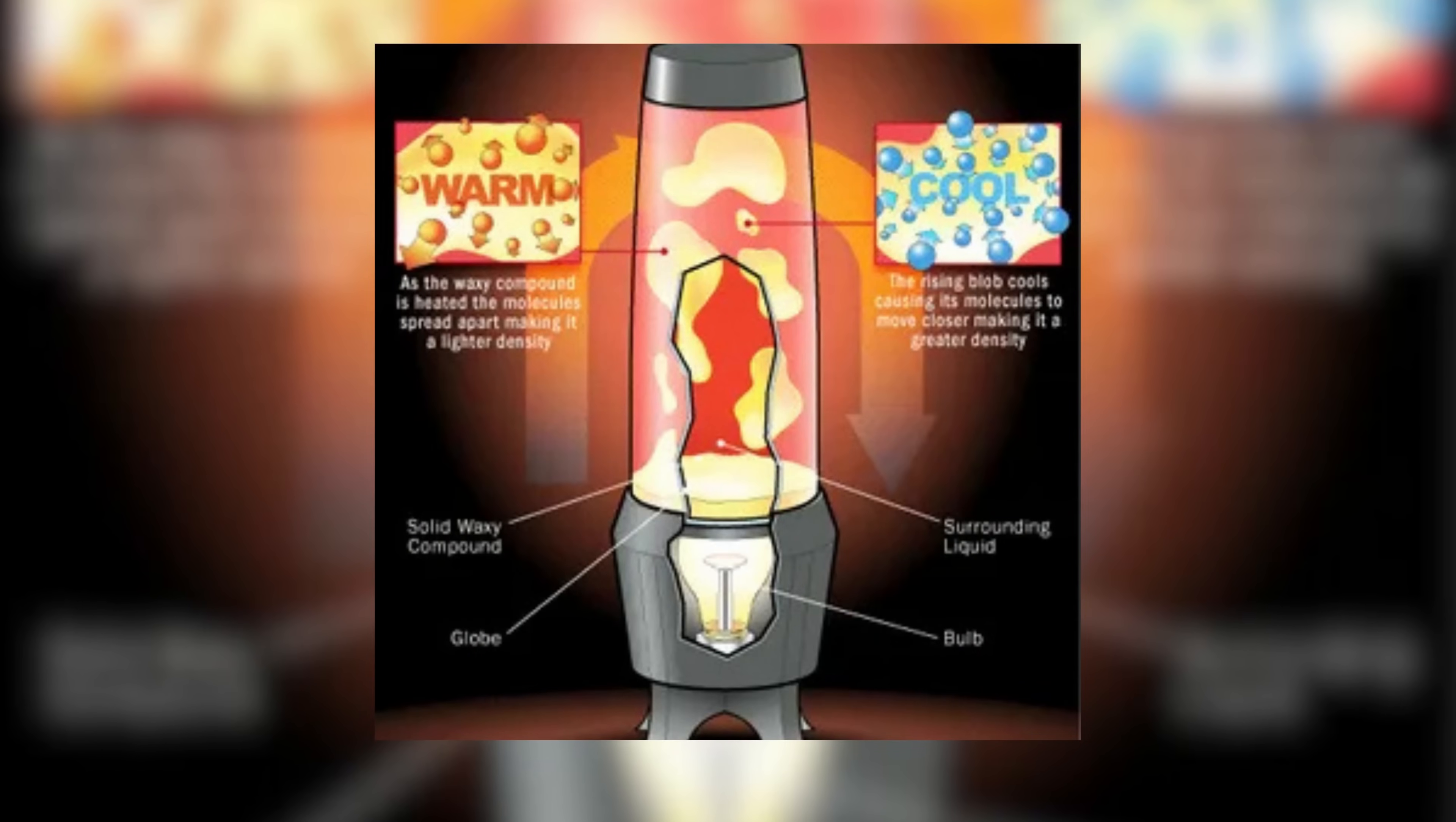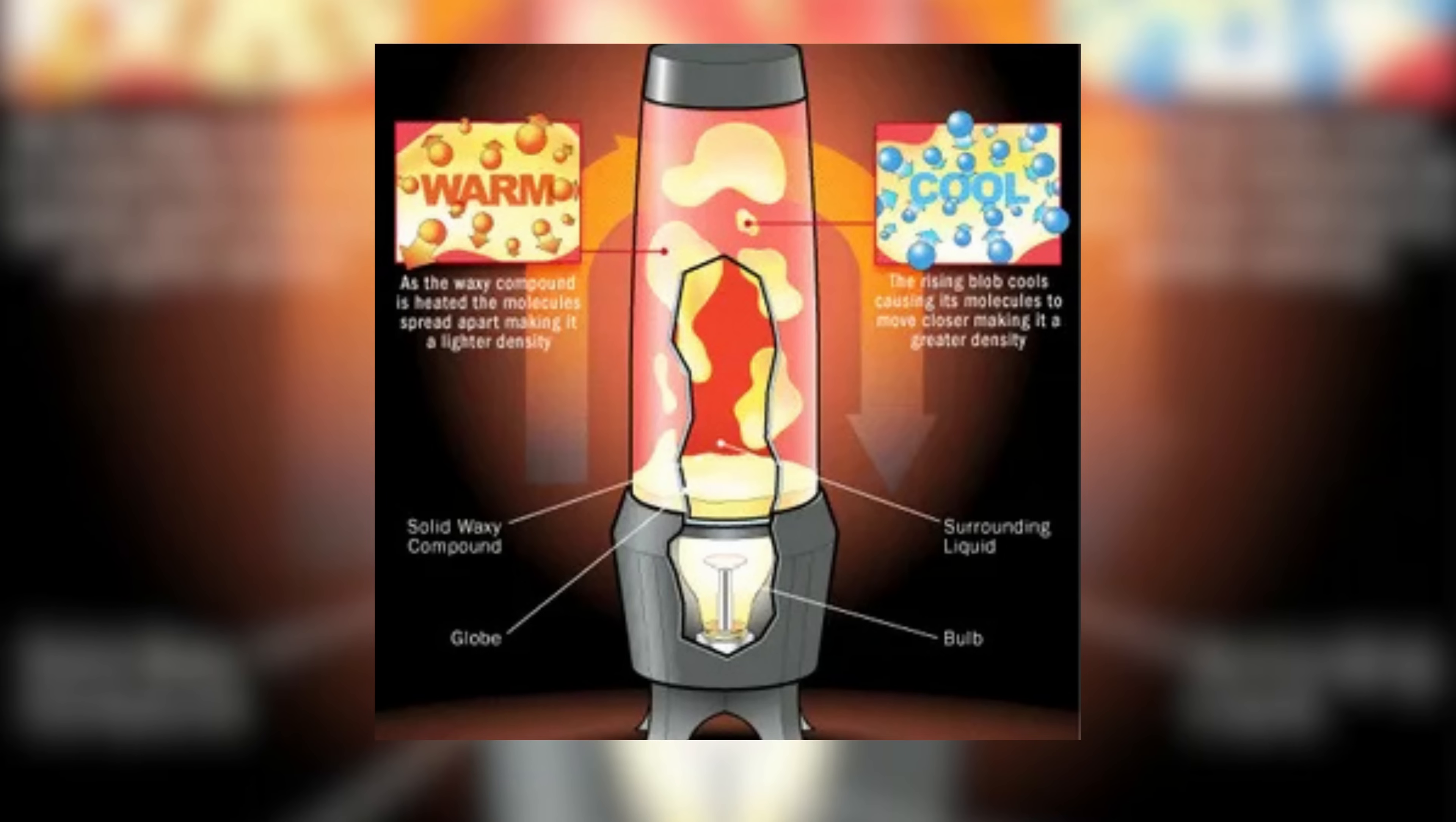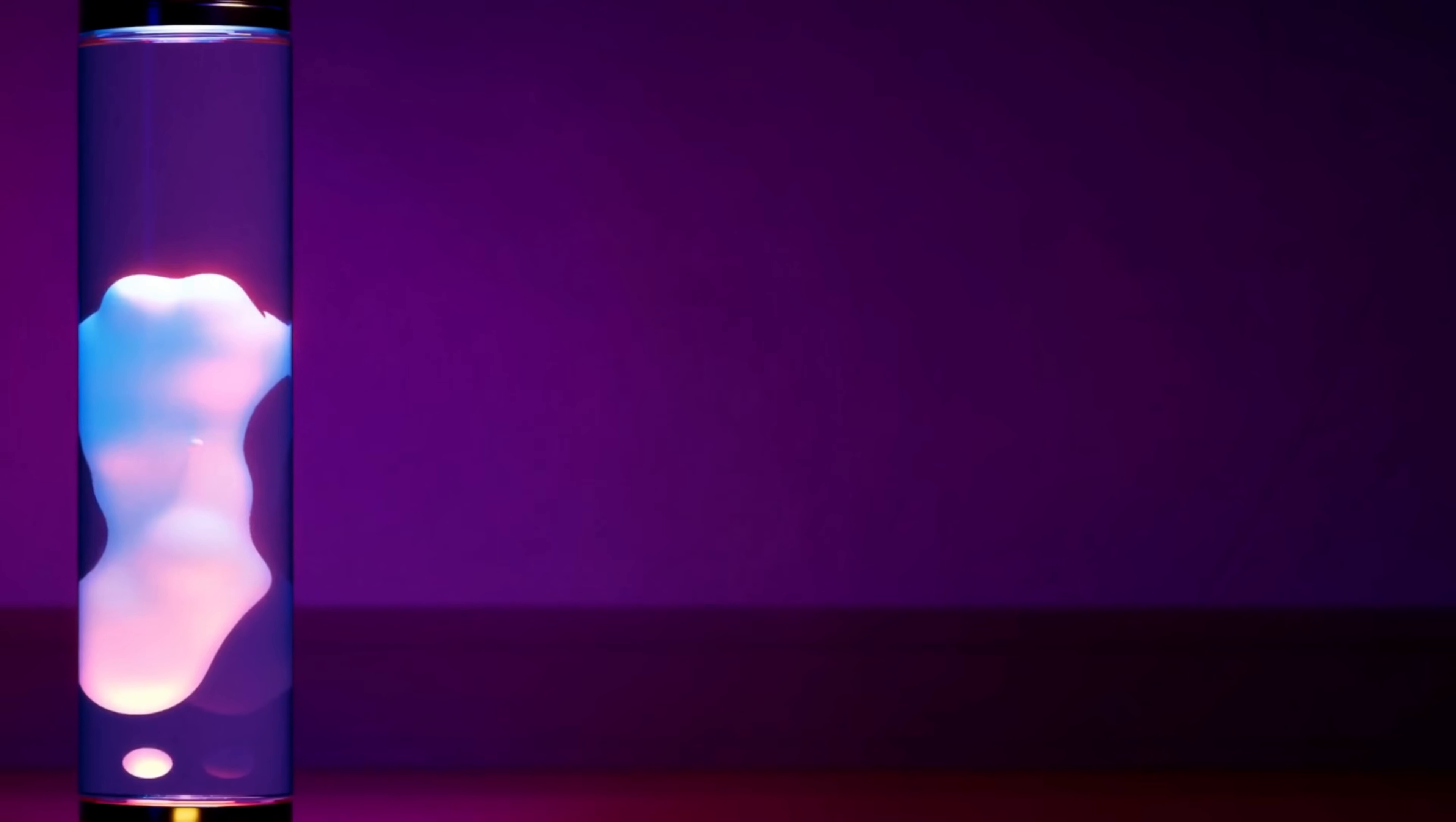The real magic begins when heat is applied. Beneath the base sits an incandescent bulb that serves as both light source and heat engine. As it warms the wax at the bottom, the wax's density begins to change, setting the entire mesmerizing cycle in motion.